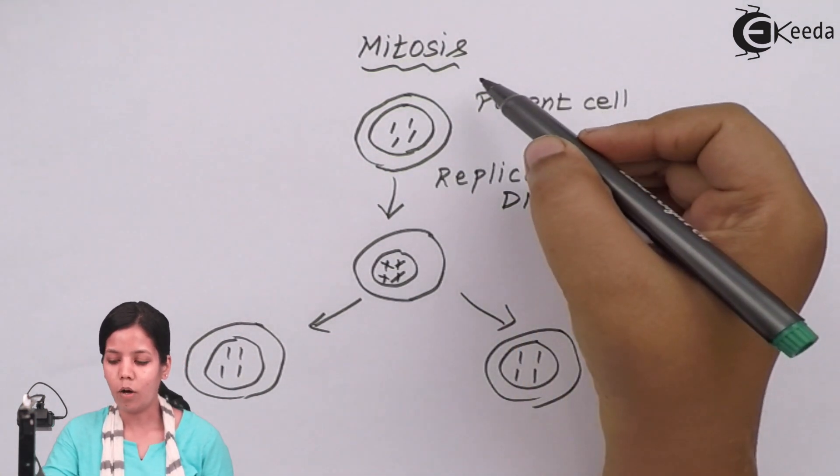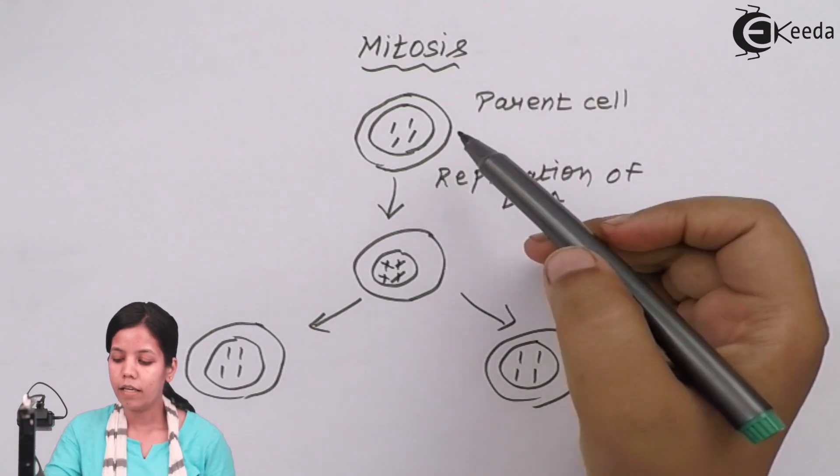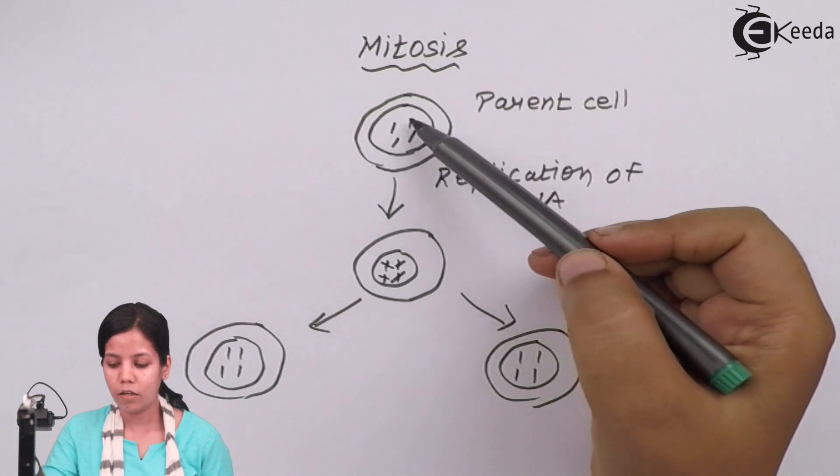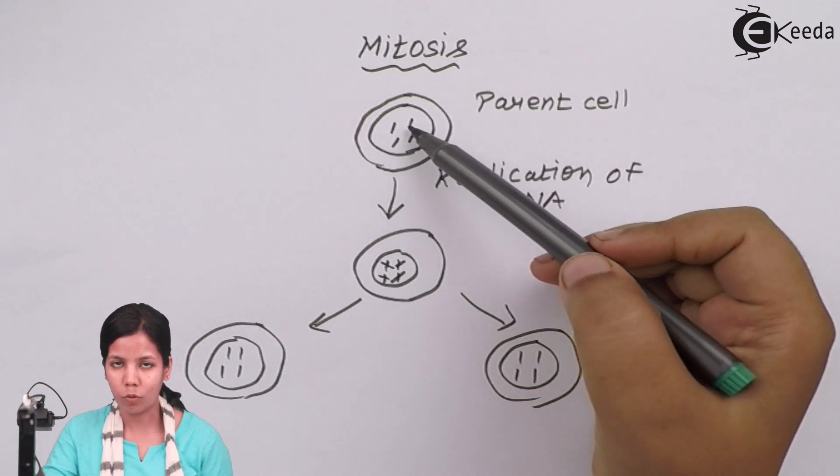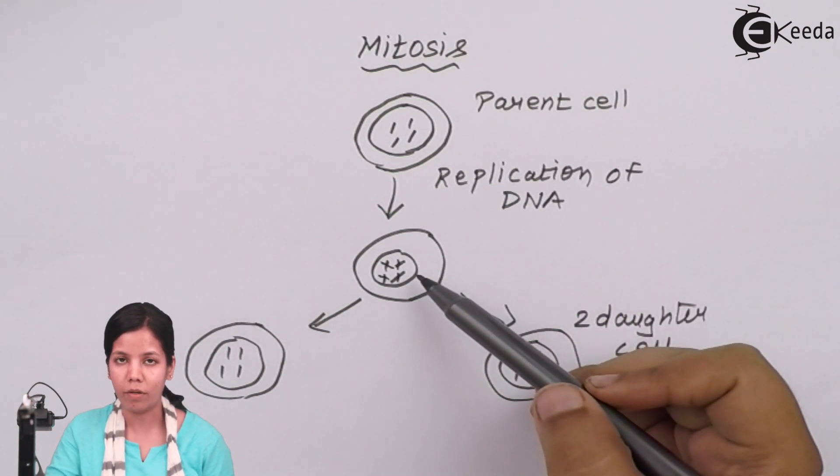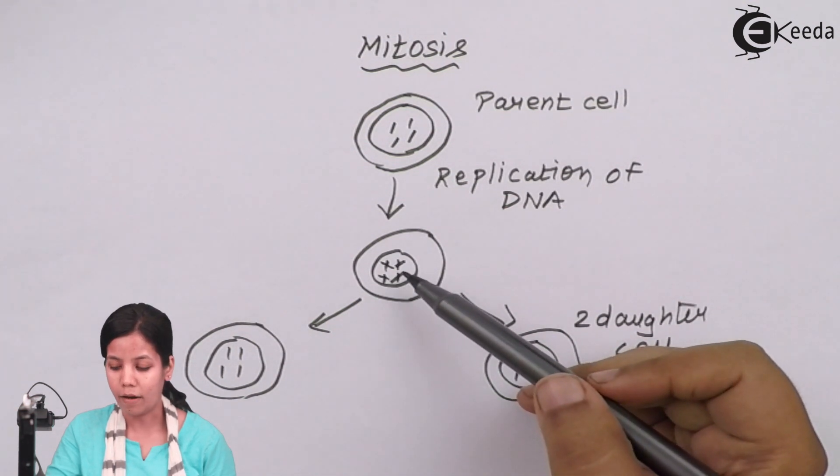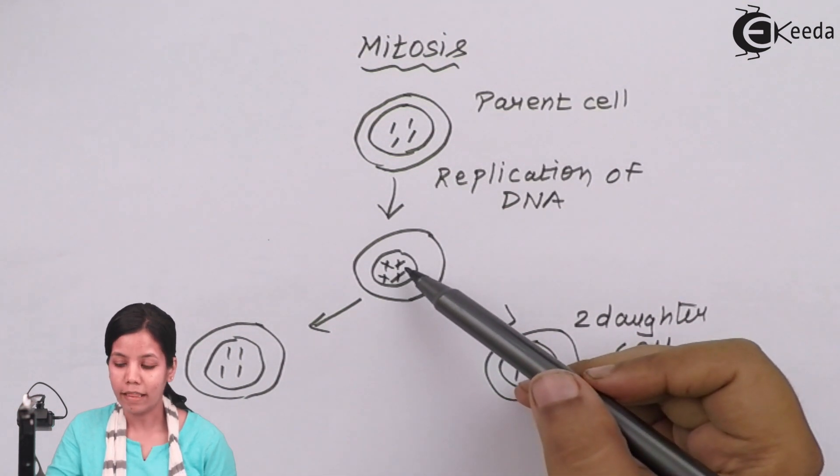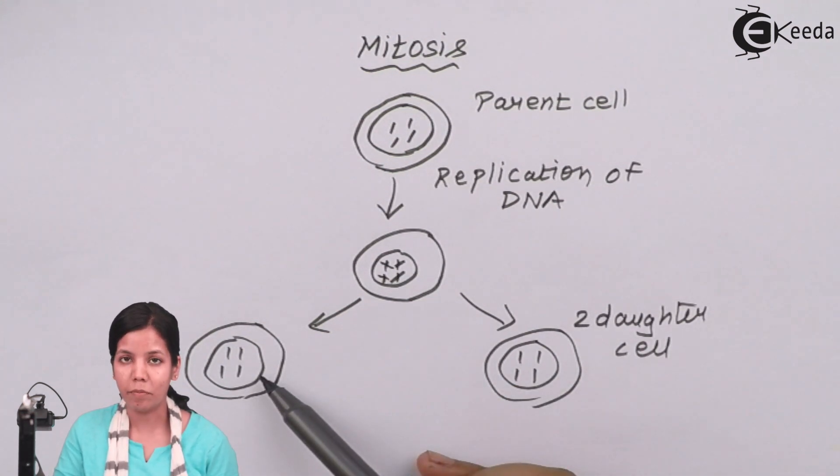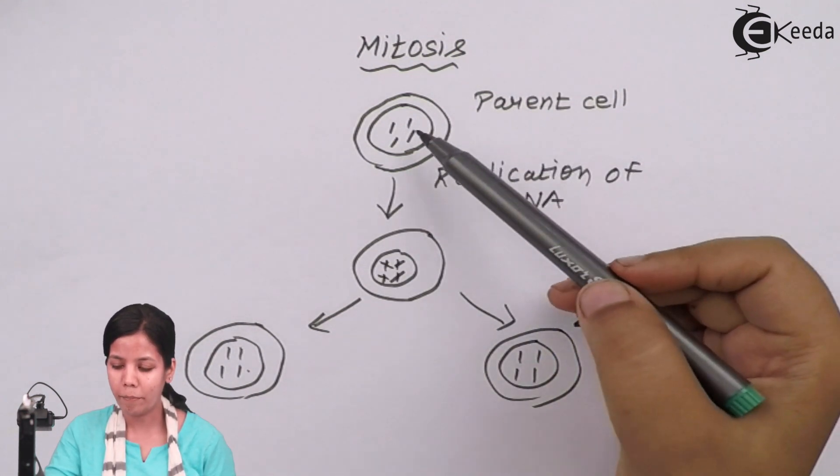Let us see how the process of mitosis takes place inside a cell. During the process of mitosis, the parent cell will have chromosomes and these chromosomes will undergo the process of replication—that is, they will become diploid in number or 2n in number.